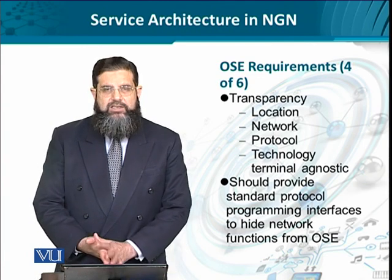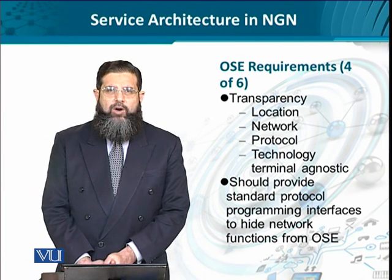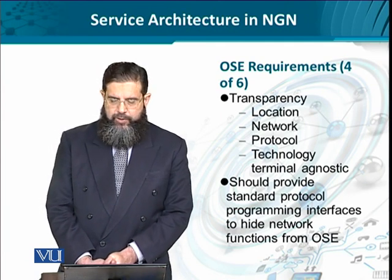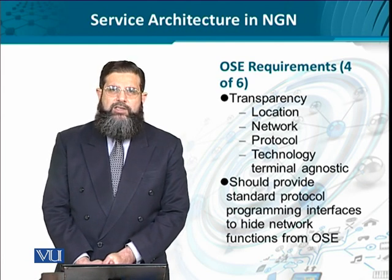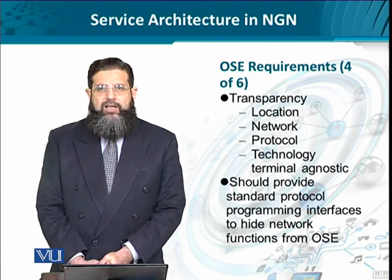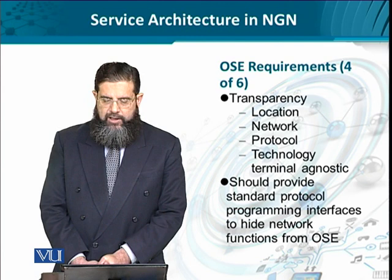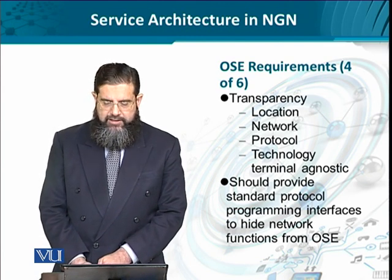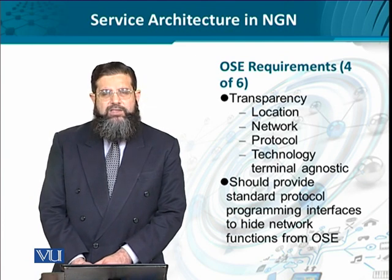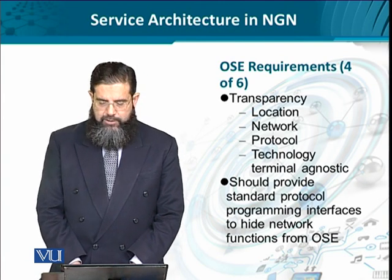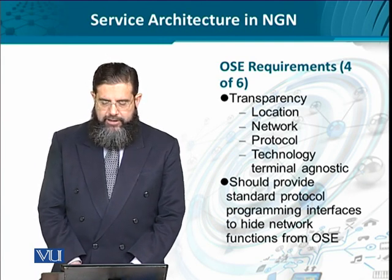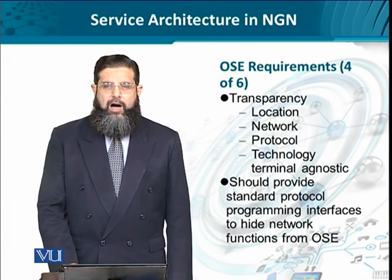The fourth requirement is that the service creation process has to be transparent and independent of location — whether a geographical location or an IP address-based location. It should stay consistent across different geographies, different IP addressing, and different other addressing schemes. The networks offering these services have to be transparent, and protocol transparency as well as terminal transparency should be ensured, so that the service is offered in a seamless manner. This can only be done when a standard API is provided, which hides the network complexity from the OSE.